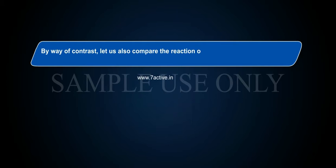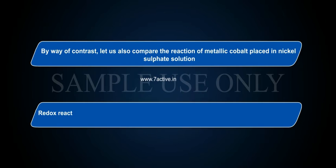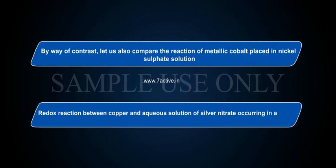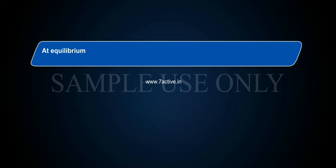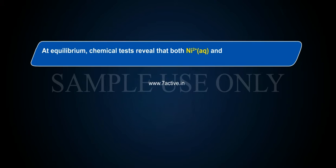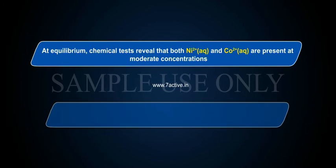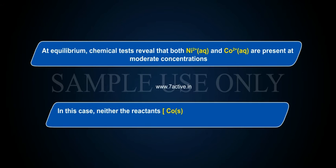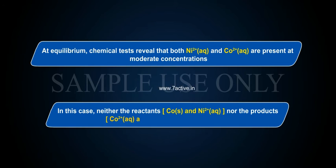By way of contrast, let us compare the reaction of metallic cobalt placed in nickel sulphate solution. At equilibrium, chemical tests reveal that both Ni²⁺(aq) and Co²⁺(aq) are present at moderate concentrations. In this case, neither the reactants Co(s) and Ni²⁺(aq) nor the products Co²⁺(aq) and Ni(s) are greatly favoured.